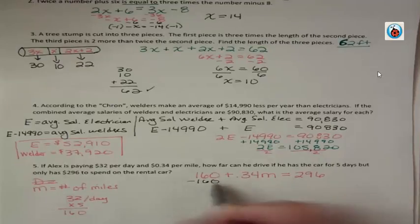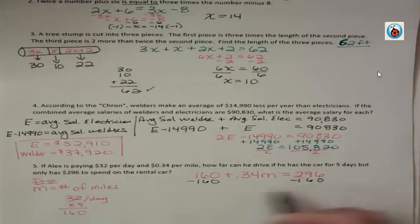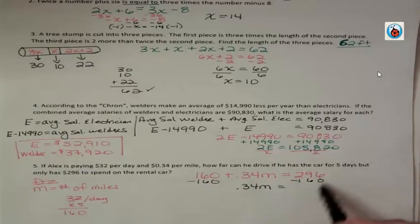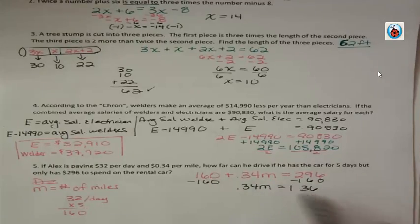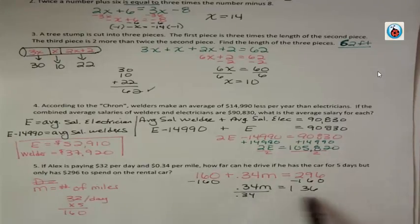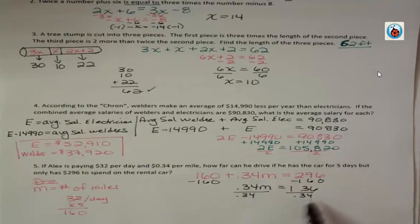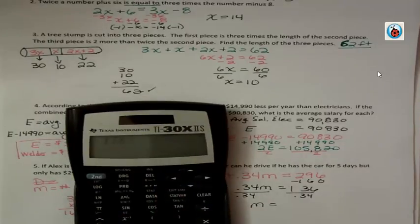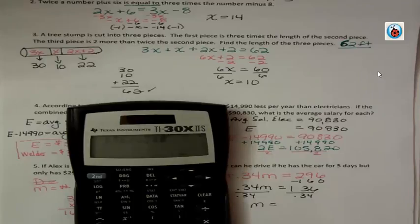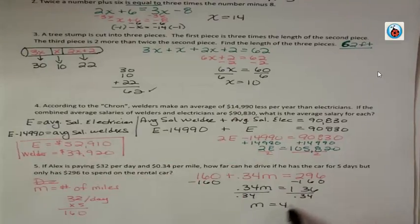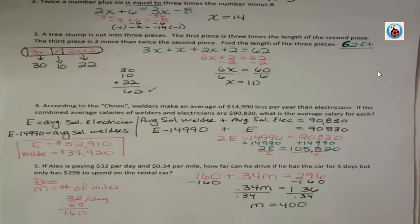So then we have to say how far could he actually drive before he goes over his budget. We're going to subtract $160 from both sides, that's 0.34M left, and over here we have 136, and then we're going to divide both sides by 0.34. Remember, if you have a decimal, you need to divide by exactly what you have. 136 divided by 0.34, or 34 hundredths, is 400. How nice that came out. So Alex can drive 400 miles in five days if his budget is $296.